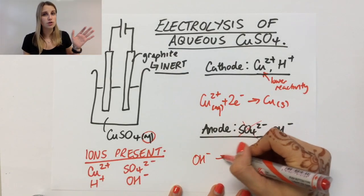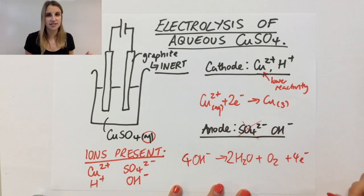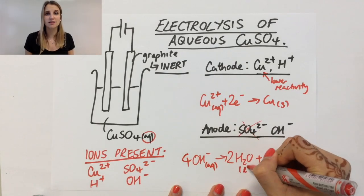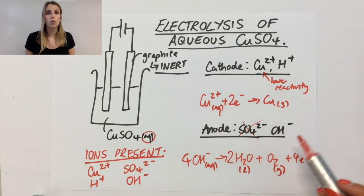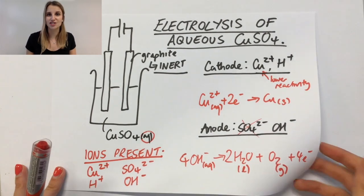At the anode, you have the choice between the sulfate and the hydroxide. But the sulfate never gets discharged, so that must mean that the hydroxide will get discharged to produce both water and oxygen.